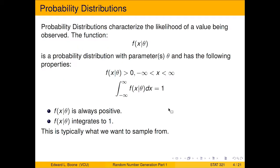All right, so the first thing we're going to need to do is talk about probability distributions. And probability distributions characterize the likelihood of a value being observed. And it usually has a function that's associated with it. And here I have f(x), and then I have this bar which means 'given', and this is θ, which is the probability distribution's parameters.